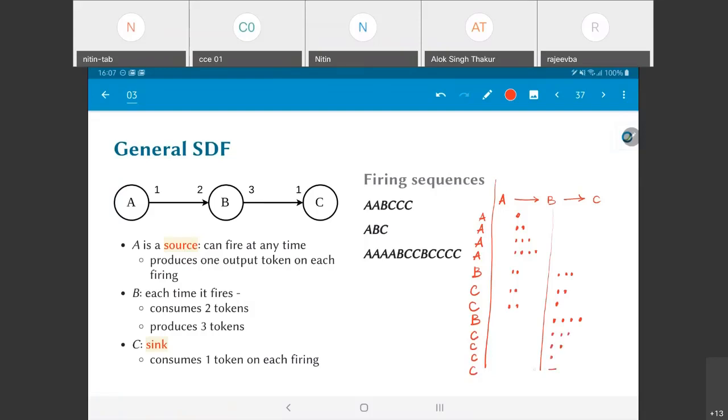This tells us that from this point I can now have four consecutive firings of C, each of which will reduce this number until finally we're left with no tokens on the A to B edge, no tokens on the B to C edge, and we've come back to the original state of the system.